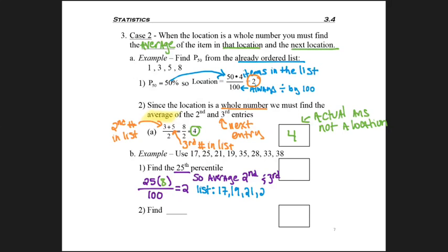Wait. The list wasn't in order. As I started to take the second and third entries, I would have taken the 25 and the 21, but that's not right. I needed to reorder the list. Now I can take the second and third entries, which are 19 and 21. Divide those by 2 because there's 2 numbers to get 20, and that's my answer.